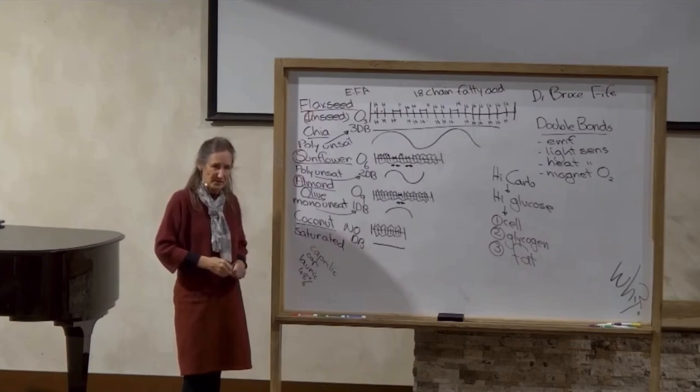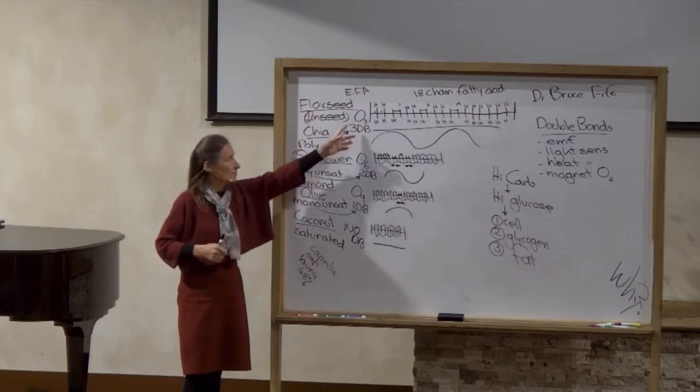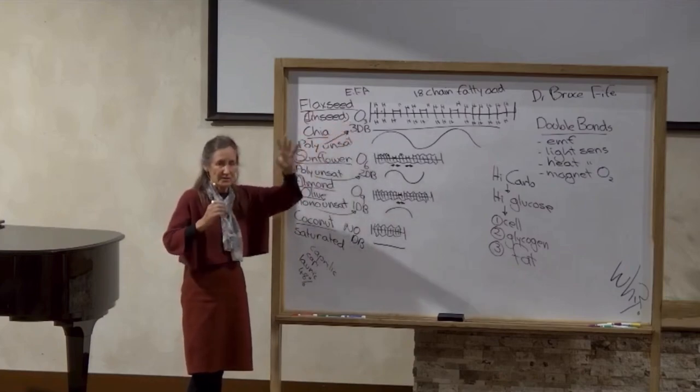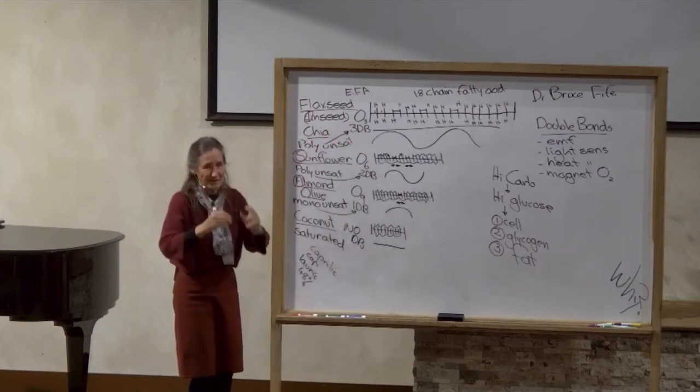And yes, omega-3 does go through the blood-brain barrier. But the omega-3 is what the body loves to use exclusively for the membrane around the brain cells.